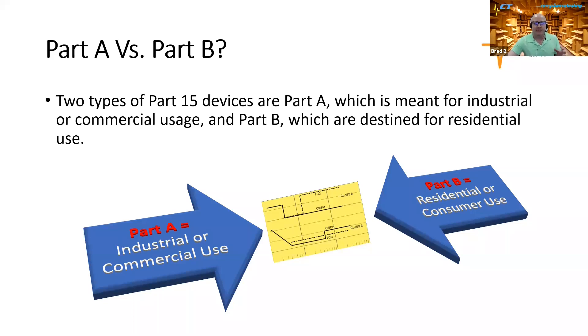Class A devices are meant for industrial commercial use, like oil and gas or big manufacturing equipment, things like that, used mostly for business use. And then Part B,